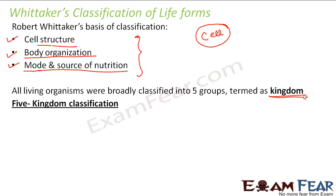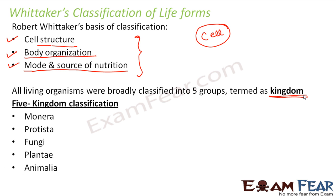This became popularly known as Whittaker's five kingdom classification. The five kingdoms into which all life forms were classified are: Monera, Protista, Fungi, Plantae, and Animalia. The names might sound unfamiliar right now, but as we go ahead, we will discuss each of them in detail.